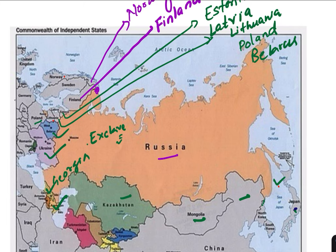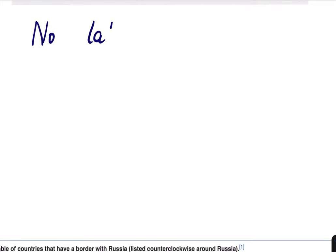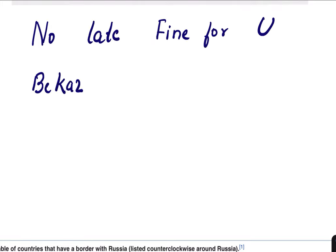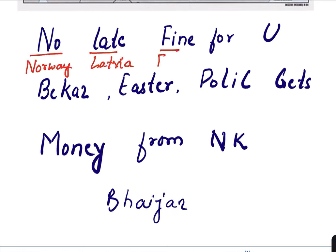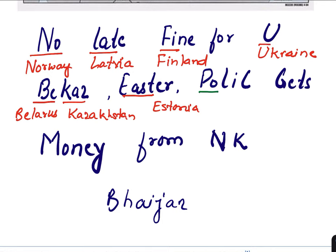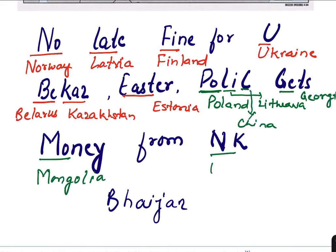To remember these many countries, we will make a sentence: 'No late fine for you because it is Easter, and on Easter police gets money from NK Bhaijan.' Breaking it down — No: Norway, Late: Latvia, Fine: Finland, You: Ukraine, Be/Because: Belarus, Ka: Kazakhstan, East: Estonia, Po: Poland, Li: Lithuania, C: China, From: (separator), Ge: Georgia, Money: Mongolia, NK: North Korea, Bhaijan: Azerbaijan.